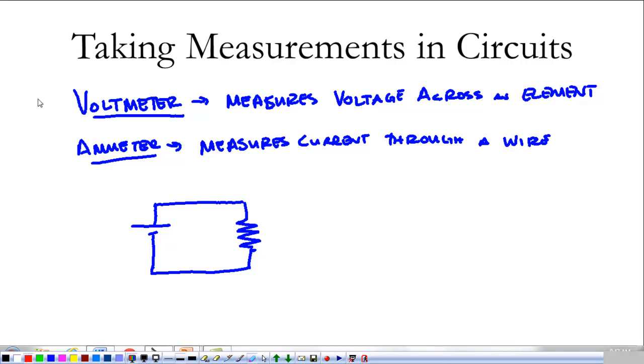Now, the symbol for a voltmeter is a V with a circle around it. The symbol for an ammeter is an A with a circle around it. Those are the two things that we're going to use to measure stuff.